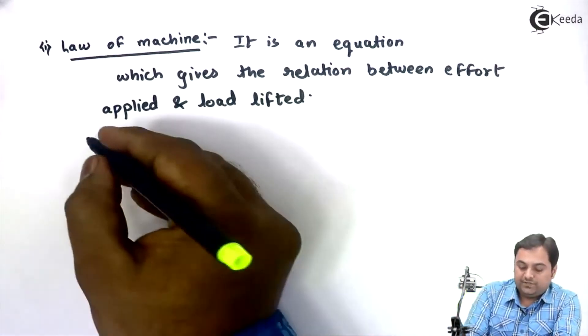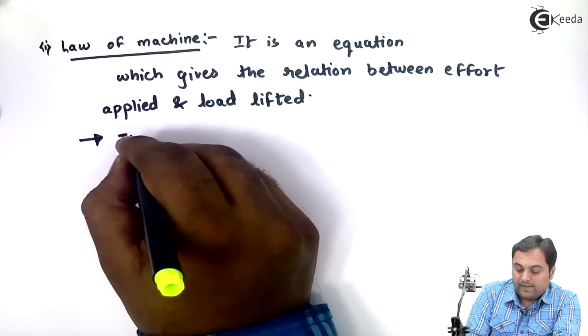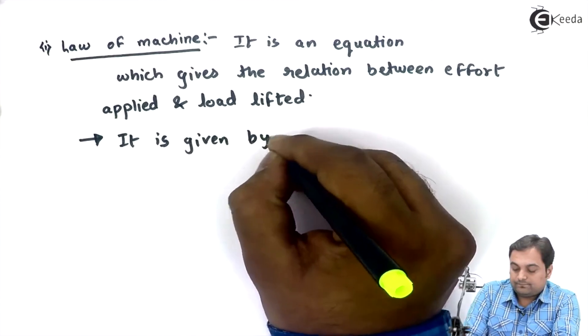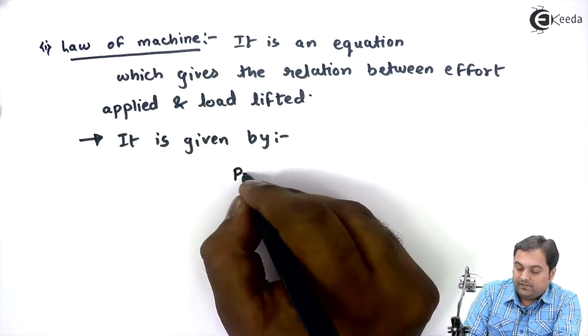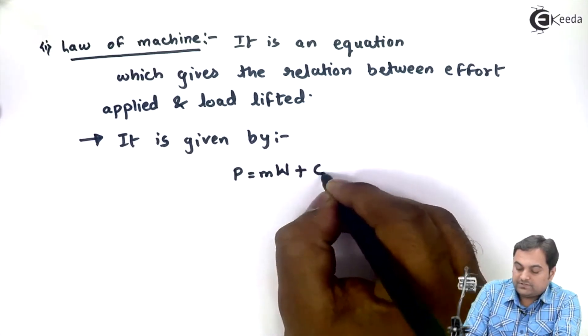I'll write that equation. Law of machine is given by: P is equal to small m into W plus C.